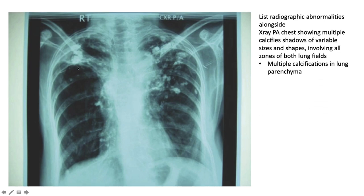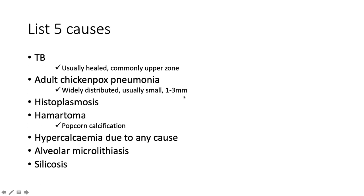This X-ray shows multiple calcified shadows of variable size and shape involving all zones of both lung fields bilaterally — these are multiple calcifications in the lung parenchyma.